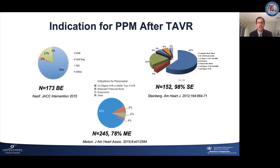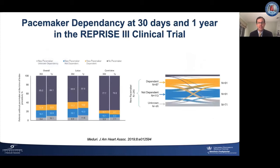The indications for pacemaker implantation after TAVR have been well studied for all available transcatheter heart valve systems and shown to be high degree atrioventricular block in the majority of cases, 60 to 80%. However, this means that anywhere from 20 to 40% receive a pacemaker for indications other than high degree atrioventricular block, including sick sinus syndrome, bi-fascicular or tri-fascicular block, or even left bundle branch block. It has also been observed, in this case from REPRISE 3, that only about half of patients who receive a new pacemaker after TAVR are dependent at follow-up of 30 days or one year. This has led to important interest in ways to reduce unnecessary pacemaker implantation after TAVR.